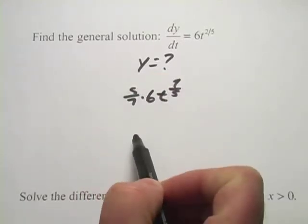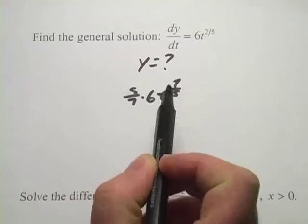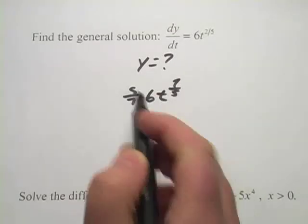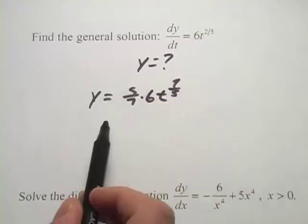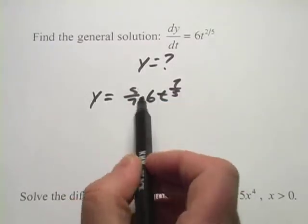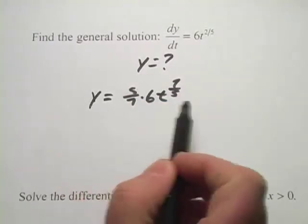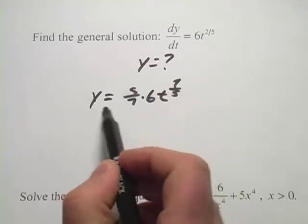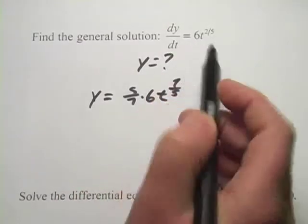And then we can simplify this a little bit if we want to, but what I'd like to do first is make sure, so I'm saying this is what y is now. But I'd like to double-check by taking the derivative of this. Let's go backwards and make sure if we take the derivative of this, we really get this up here.